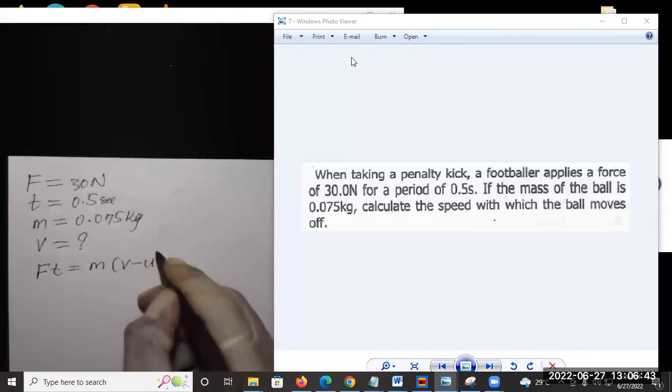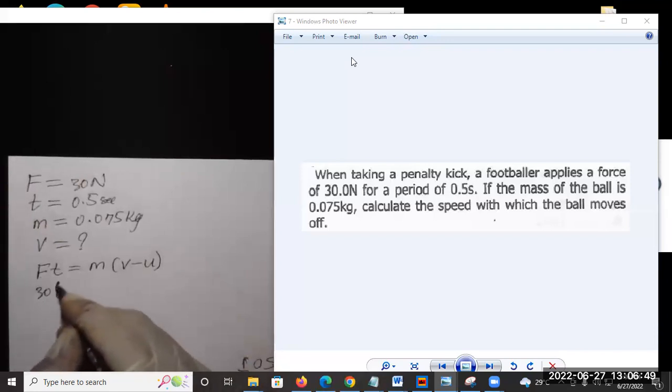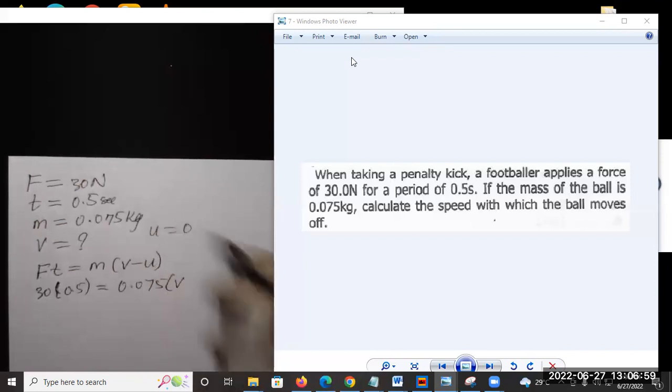Given by this expression here. If we substitute everything, the force is 30, and the time is 0.5. The mass is 0.075 v. Initial velocity is 0 here in this case.